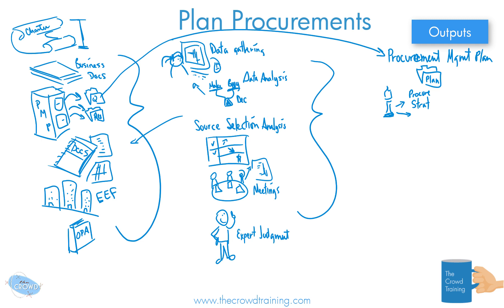We should also determine which documentation is going to be best for us to get our procurements. That could be an RFQ, it could be an RFP, or a request for bid. Whatever it is, we need to figure out what procurement documentation is best. There could be many types of documents.